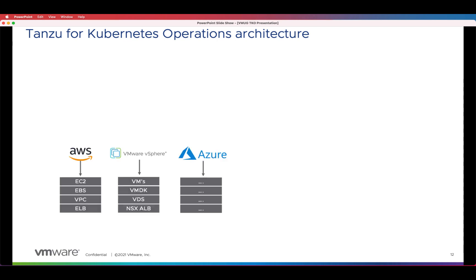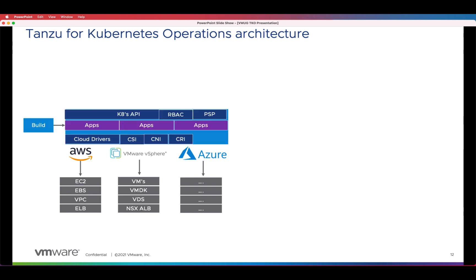However, to build the Kubernetes stack itself on a particular infrastructure provider, it means that the Kubernetes platform needs to have the appropriate drivers, appropriate installation, and appropriate building blocks to work with. For example, if you're deploying a Kubernetes platform on vSphere, then that Kubernetes needs to understand how to work with different infrastructure objects in vSphere, like storage, like networking, etc.